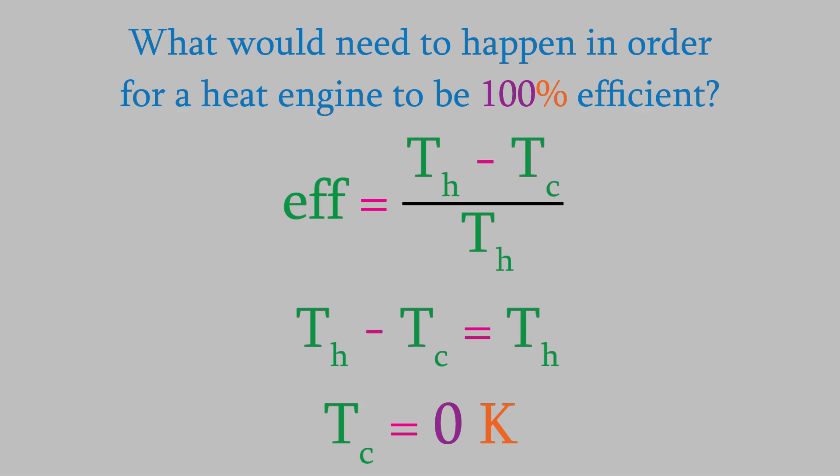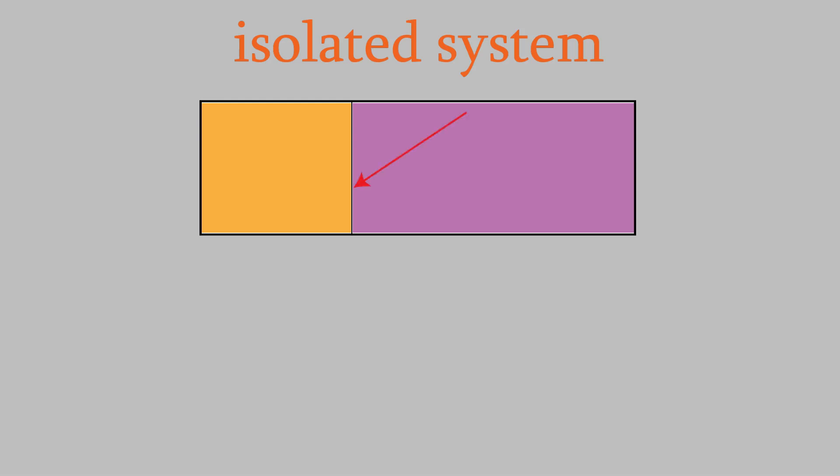Now let's look a little more deeply at the implications of all we've learned about entropy in the last few videos. Suppose we have an isolated system — that is, matter can't get in or out of our container, but neither can energy, including heat. This container is divided into two chambers with an immovable wall between them, which prevents particles from getting from one side to the other, but heat can be exchanged through the wall. We'll call the volume and temperature on the left side Va and Ta, and on the right side Vb and Tb. Notice that the two temperatures might be different.